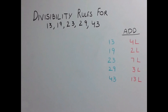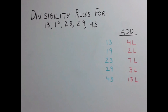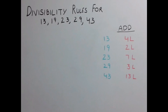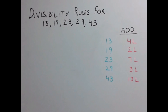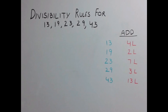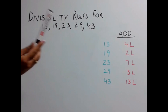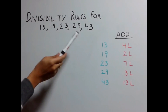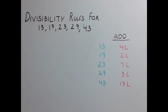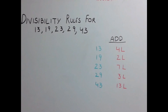Welcome back to India Edu Tutorials. We have discussed many tricks in these classes, including the divisibility rules for 2, 3, 5, 7, 9 and 11. Today we are going to discuss another set of divisibility rules for 13, 19, 23, 29 and 43. We have clubbed these numbers together because they share a common concept. Let's understand this.